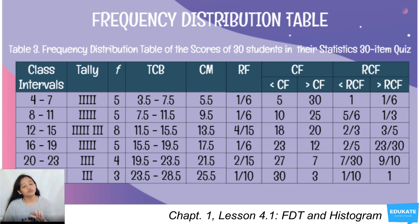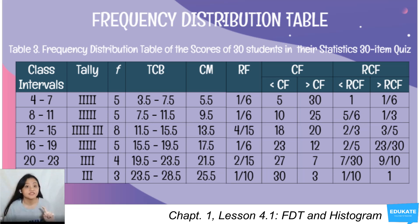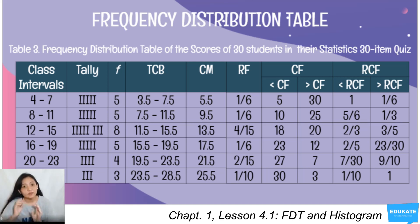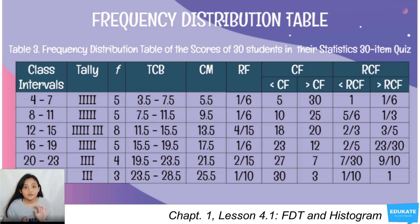Cumulative frequency has two types. For greater-than cumulative frequency, start from the top and accumulate downward: 5, then 5+5=10, 10+8=18, 18+5=23, 23+4=27, 27+3=30. For less-than cumulative frequency, start from the bottom row and accumulate upward: 3, 3+4=7, 7+5=12, 12+8=20, 20+5=25, 25+5=30.